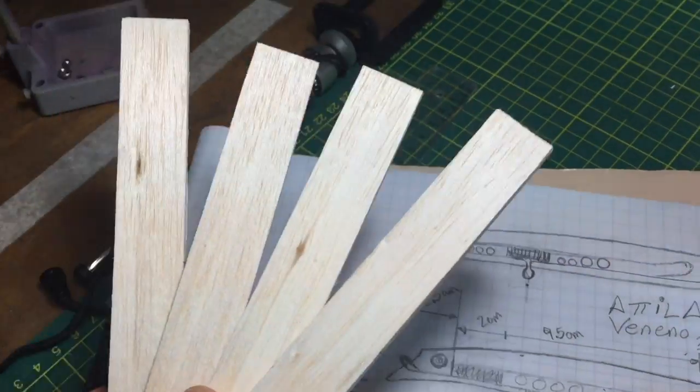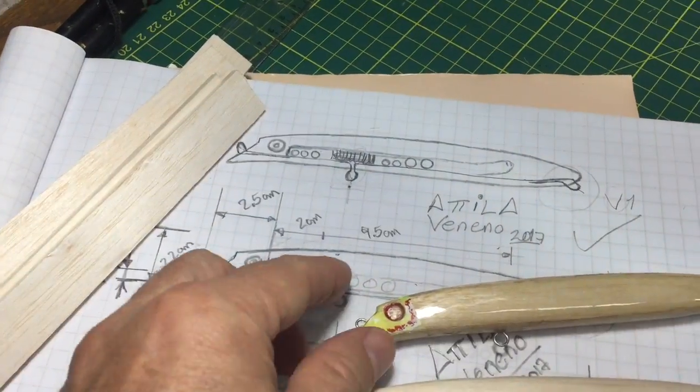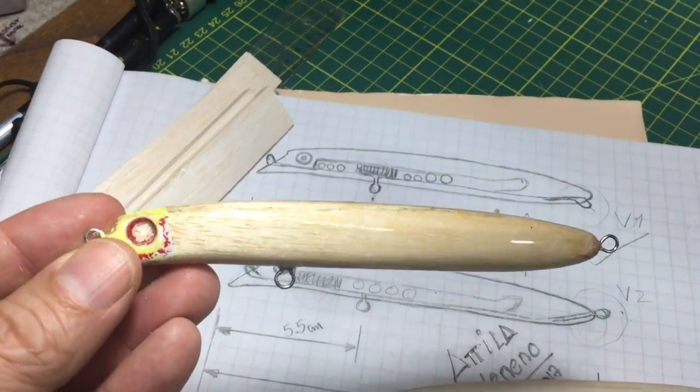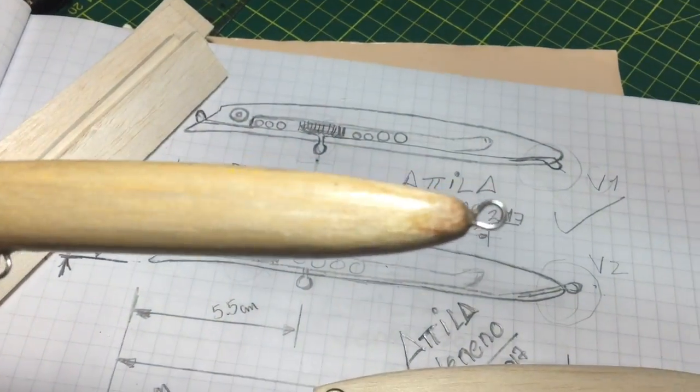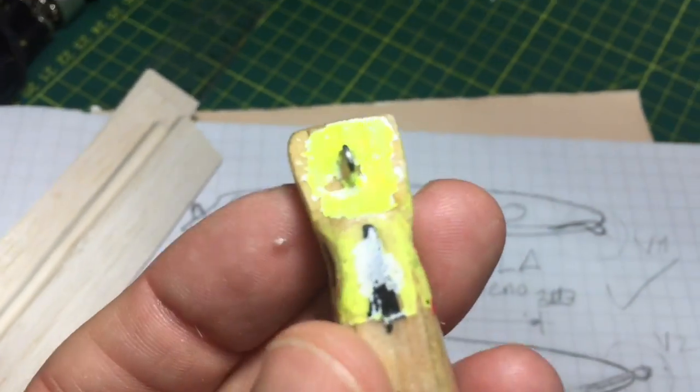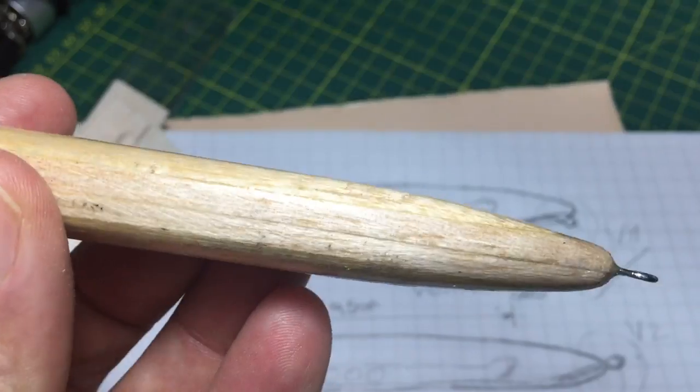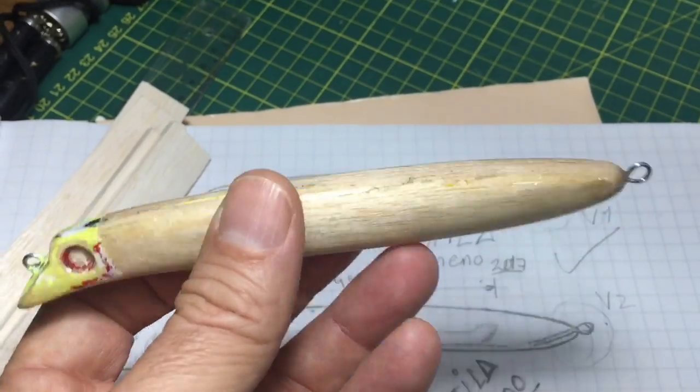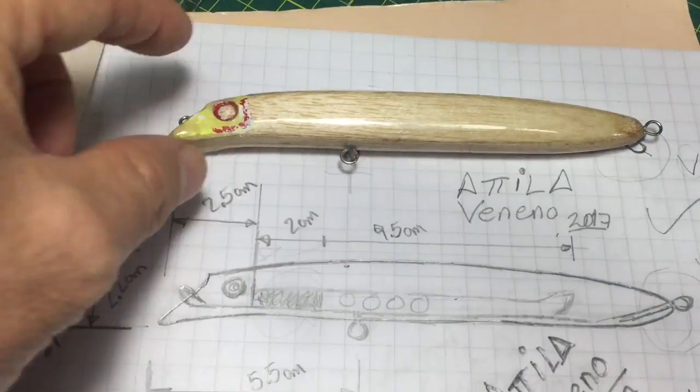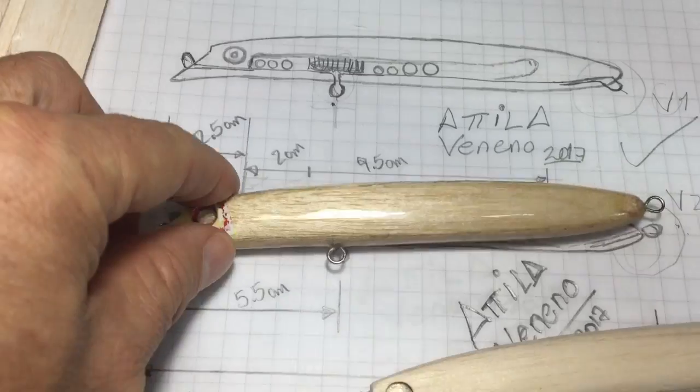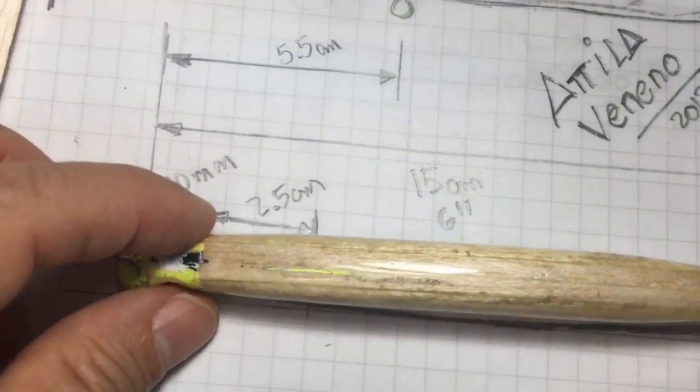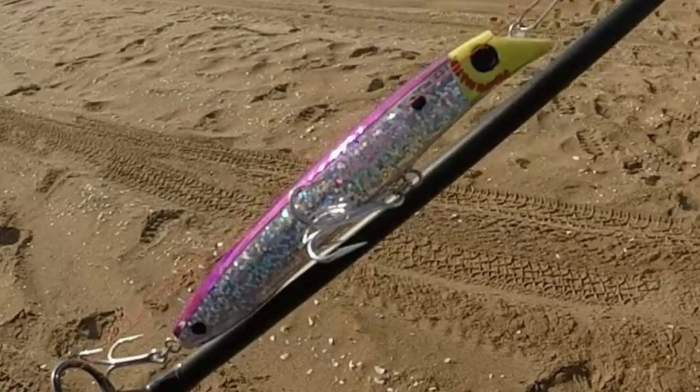Starting from four slats of balsa wood, I obtain this. This is my prototype. Actually, I use this one, which is already coated with resin. I put some stickers, some holograms, and I took it to the beach, like you see here.